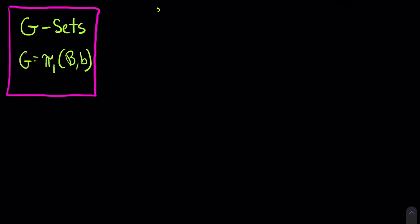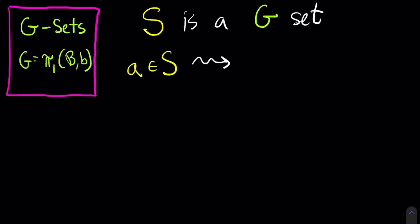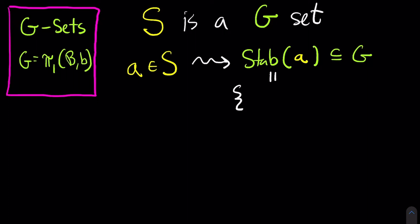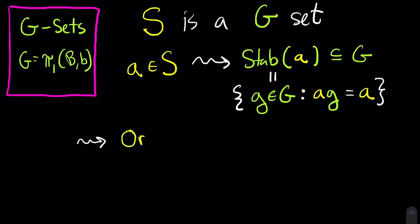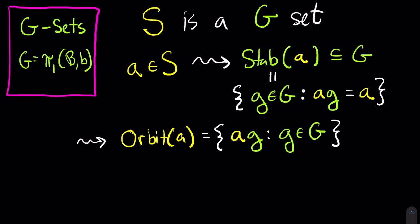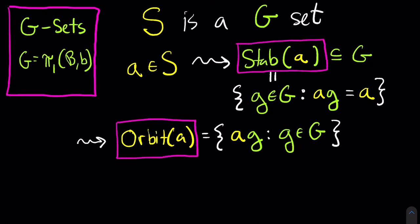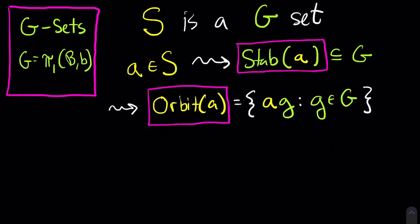There are a couple of important definitions to know when you have a G-set. Suppose S is a G-set. One is the stabilizer of an element of that set — that's equal to the set of all elements in the group that fix the element in the set. You can check that the stabilizer of any element is a subgroup of your group G. The other important definition is the orbit of an element a from your set S: the set of all elements in S that can be obtained by acting on a by an element of the group G. So the stabilizer is a subgroup of G, and the orbit is a subset of S.